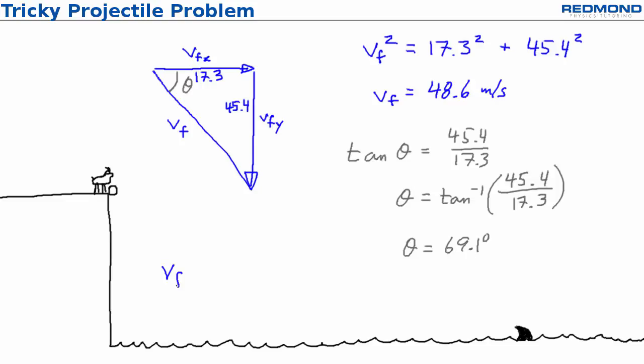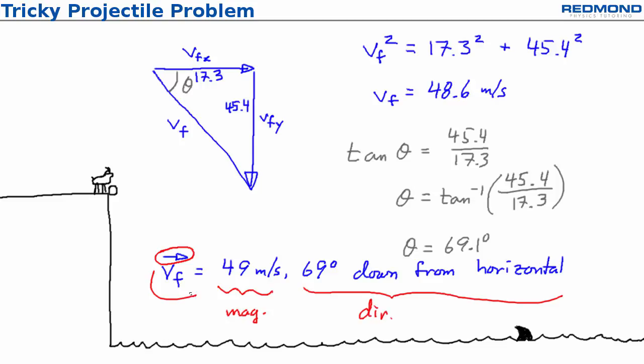So the rock's velocity just before it hits the water is 49 meters per second, 69 degrees down from horizontal. It's helpful to remember that the vector arrow means that you need magnitude and direction.